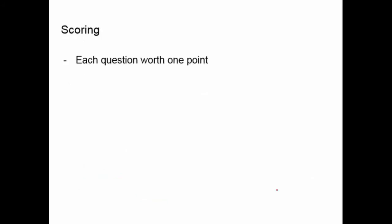Scoring: each question is worth one point and they're all equal. There is a conversion table at the link below with all the score possibilities — if you score 20, 21, or 22 out of 40, what will be your band score? These conversion tables will convert your score depending on what you get.